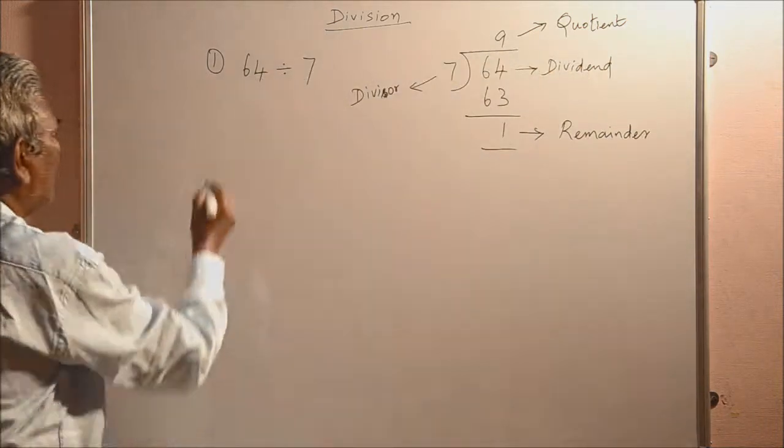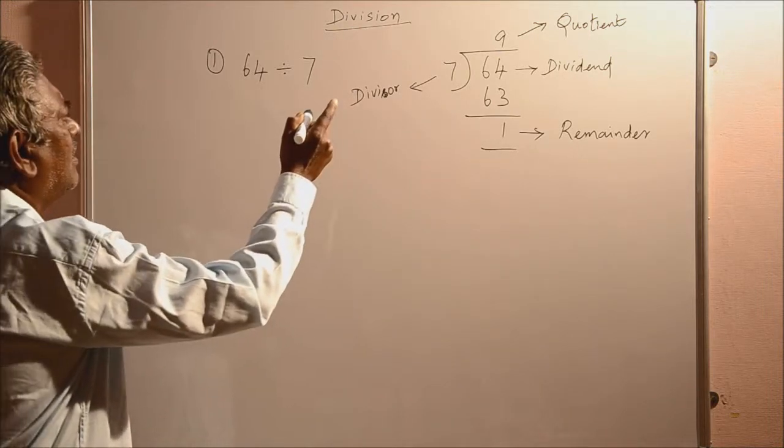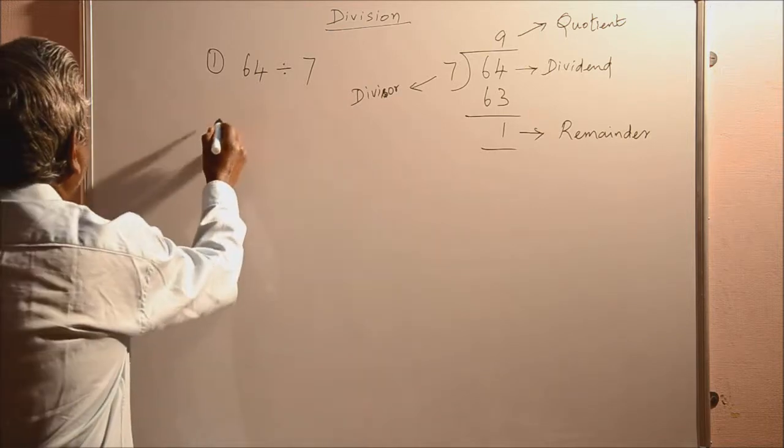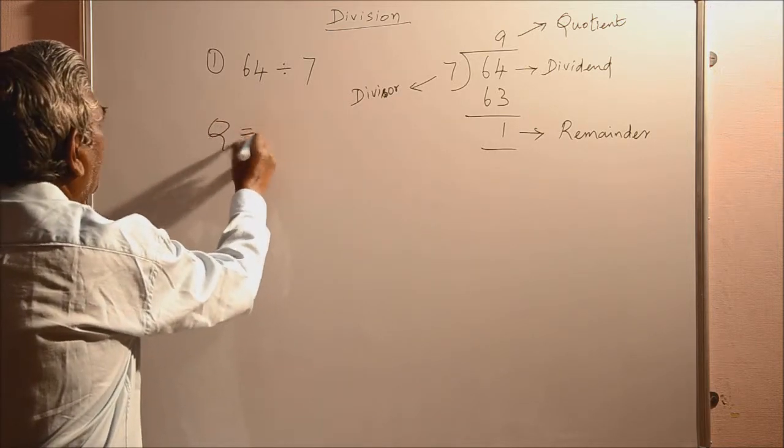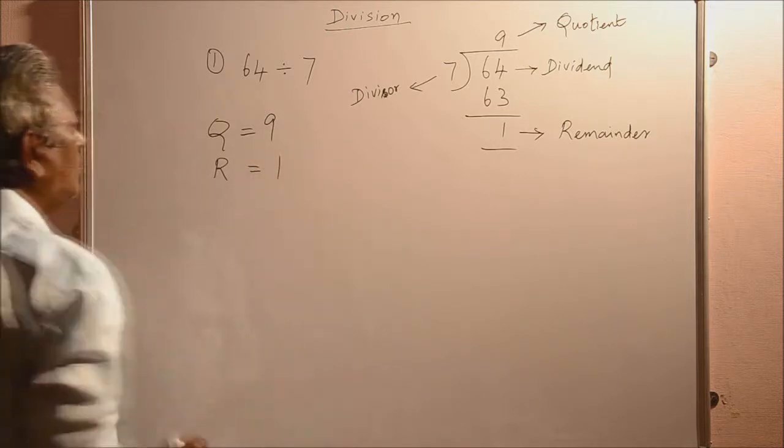So, here, in this division, quotient is 9. I write, for quotient, Q. So, Q equal to 9. And for remainder, I write R. R is equal to 1 here.